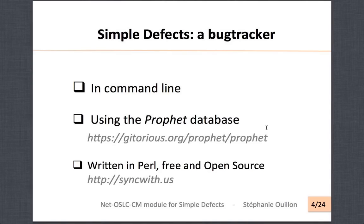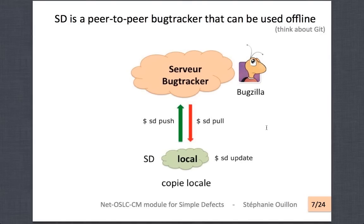Simple Defects is using the Prophet database — I will come back on it in a few seconds. Simple Defects is written in Perl, it's free and open source. The main idea is that it's a peer-to-peer bug tracker that you can use offline. You have a bug tracker server that's a remote server, and on your local machine you have Simple Defects. You can clone the remote bug tracker database, go offline, work on your tickets, and then when you come back online you can synchronize your changes.